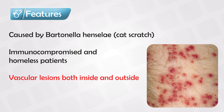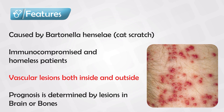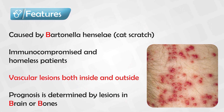The prognosis is directly correlated with two specific locations, either the brain or the bones. Remember: bacillary is bad if there is involvement of the brain or bone — the 3 Bs.